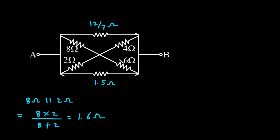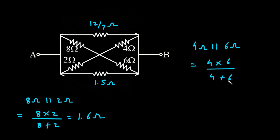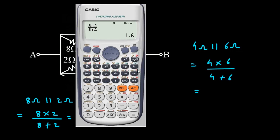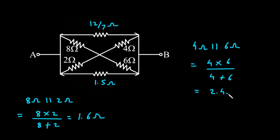Similarly, this 4 Ohm parallel with this 6 Ohm — so 4 Ohm parallel with 6 Ohm will be 4 into 6 divided by 4 plus 6. If we solve this, we get 2.4 Ohm.